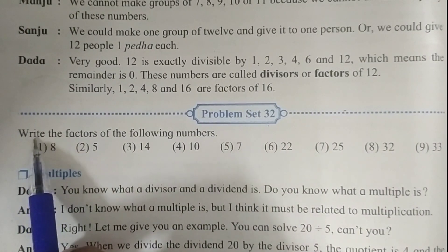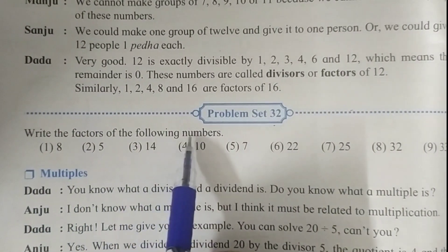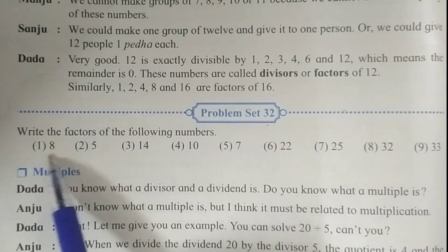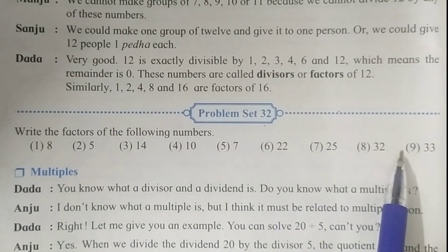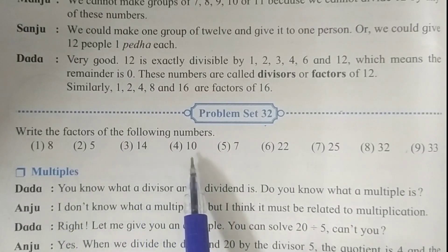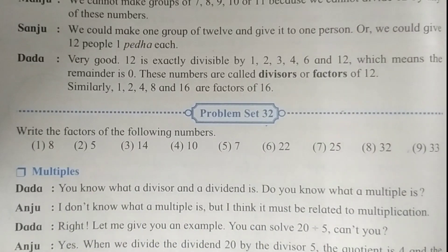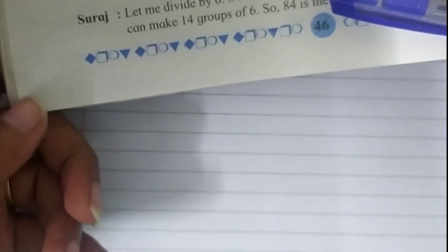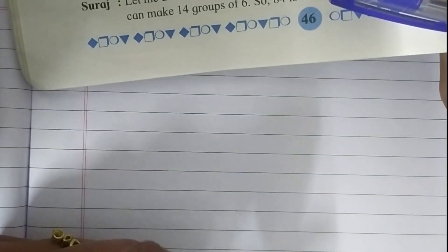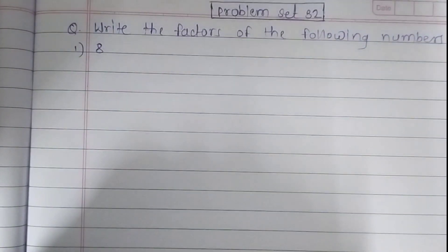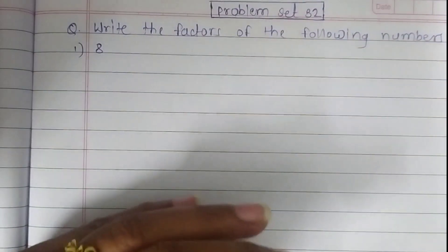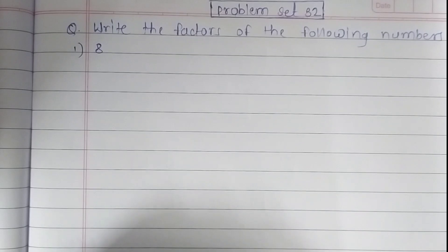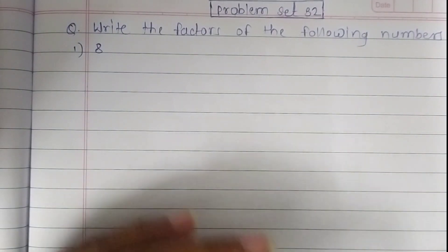The question is: write the factors of the following numbers. There are 9 questions here. We have to write the factors of the given numbers. In my last video, I explained about factors and multiples. Factors means we have to write the numbers by which the given number is exactly divisible. In short, we have to write the tables in which the given number falls.